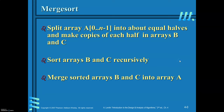Merge sort is an example of the divide and conquer technique. Given an array, you divide it into equal halves. The first half is copied onto array B and the second half onto array C. Then sort arrays B and C recursively, and finally merge the sorted arrays B and C back into array A.